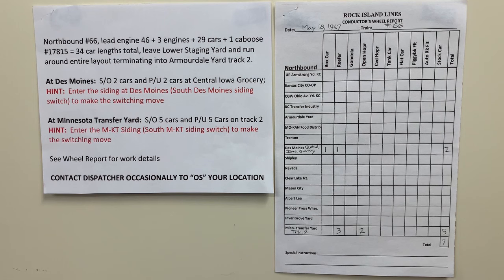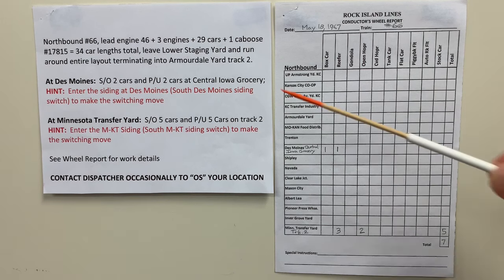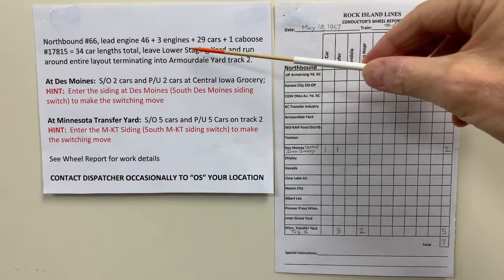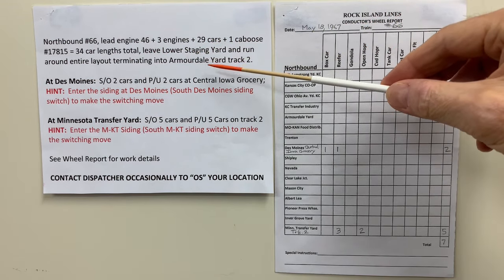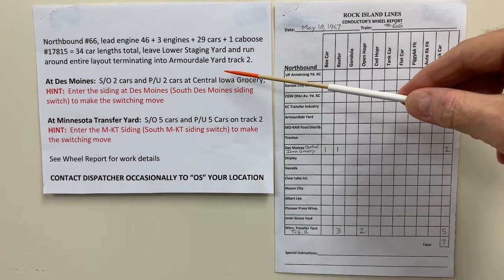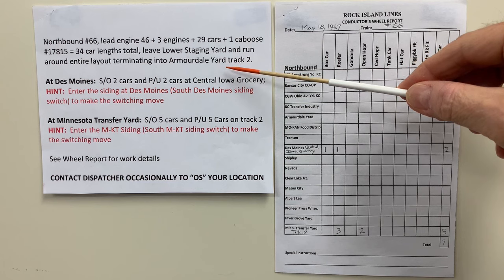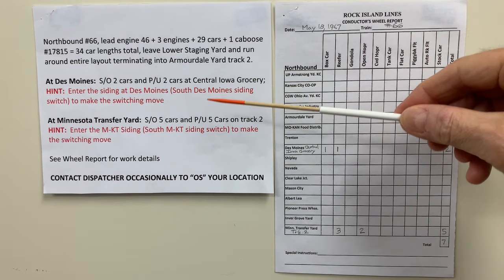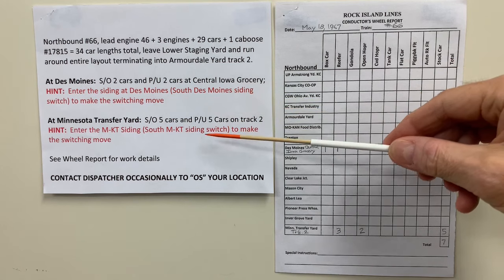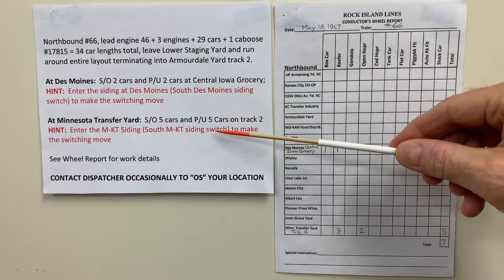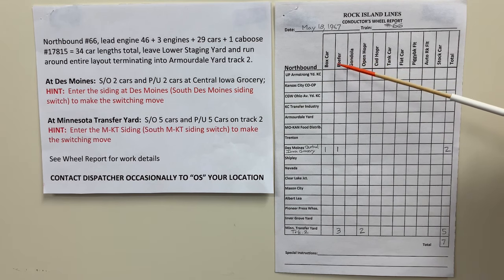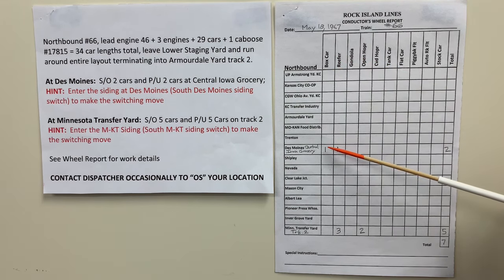Here's an example of the instructions and the conductor's wheel report that we provide to each train. In this case, this is northbound freight train number 66, and it gives some information about the train makeup — that it will run around the entire layout terminating at Armadale Yard track number two. Then specific instructions: at Des Moines it's going to set out and pick up two cars, and at the Minnesota Transfer Yard it'll set out five cars and pick up five cars. The wheel report specifically identifies the cars that will be set out.